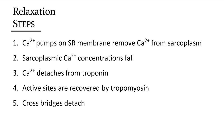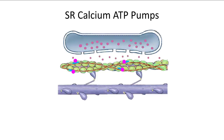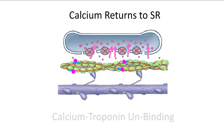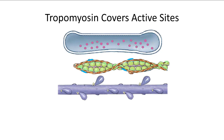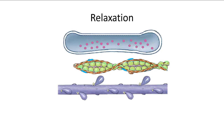Once calcium is removed from troponin, tropomyosin shifts back over, covering up the active sites on actin again, so myosin is no longer able to bind and form cross-bridges — and the muscle relaxes. The sarcoplasmic reticulum has calcium pumps that use ATP to pull cytosolic calcium back in. When calcium moves off troponin, tropomyosin covers the active sites, myosin is reset, and the muscle is in its relaxed state.